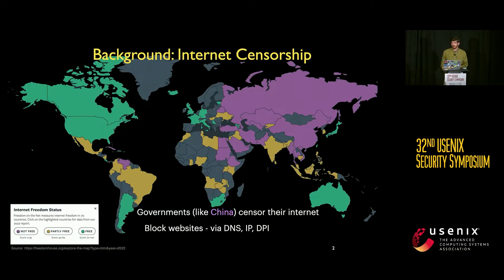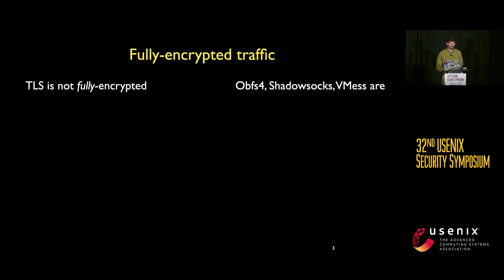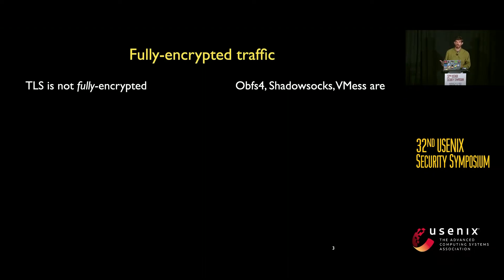Users try to get around this censorship using a variety of different proxies, VPNs, and other methods — sometimes referred to as ladders. These governments try to block these proxies, and this has become a priority as the tools get more advanced. We'll discuss two different protocols used in developing these proxies: the first is not fully encrypted and uses tunnels such as TLS; the second is fully encrypted traffic using protocols like OBS4, Shadowsocks, or VMess.